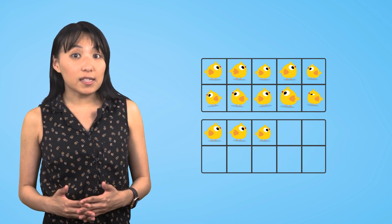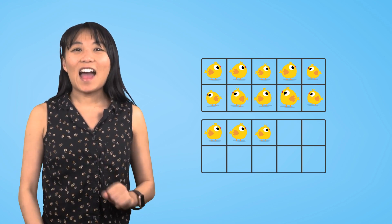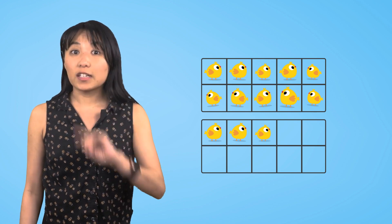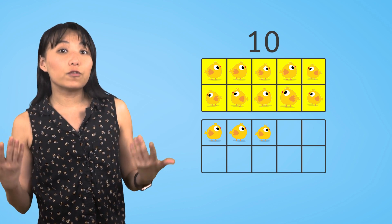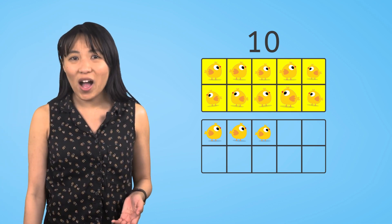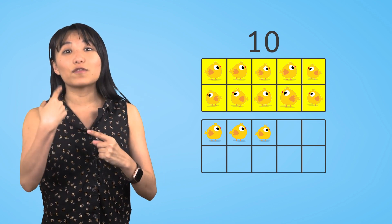Let's look at a few sets of chicks and see if we can count to find out how many there are. Remember, we already know there are ten chicks here because the ten frame is full. Instead of counting all the way from one, we can start with ten and count on from there.